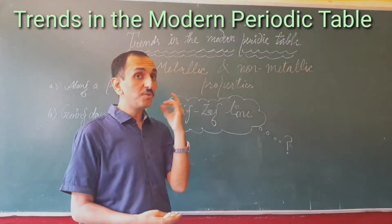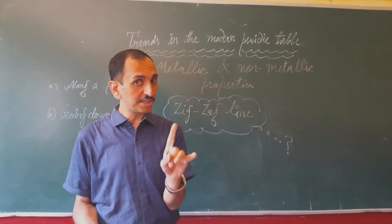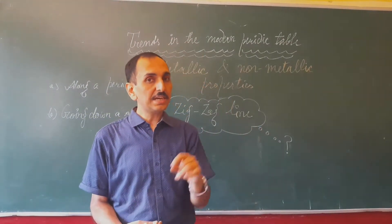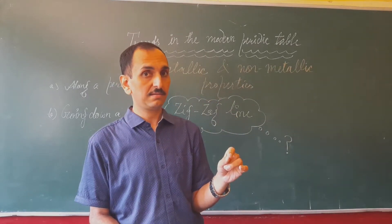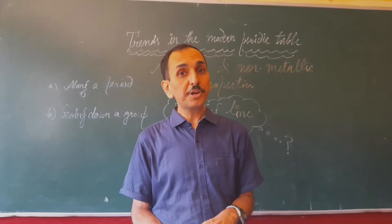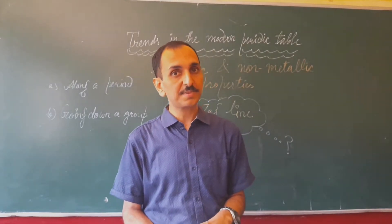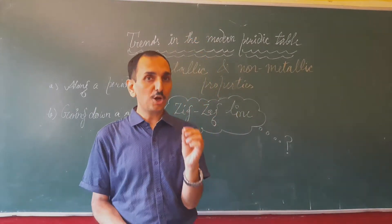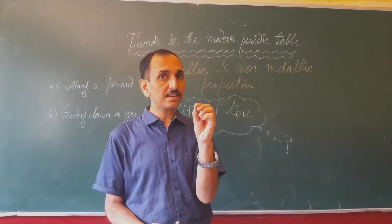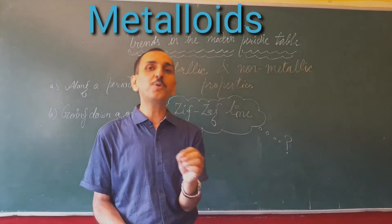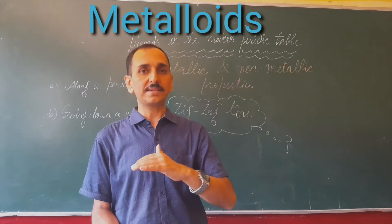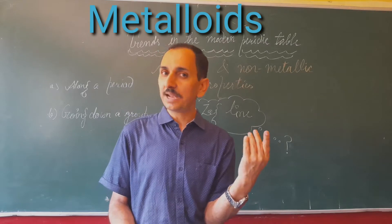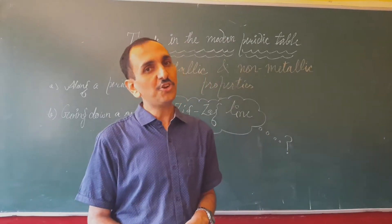First of all, have you observed a zigzag line in the periodic table? Look at page number 86 — there is a periodic table. Observe the zigzag line. The elements along this zigzag line are metalloids, meaning they have properties of both metals and non-metals. On the left-hand side of that zigzag line are metals, and on the right-hand side are non-metals.